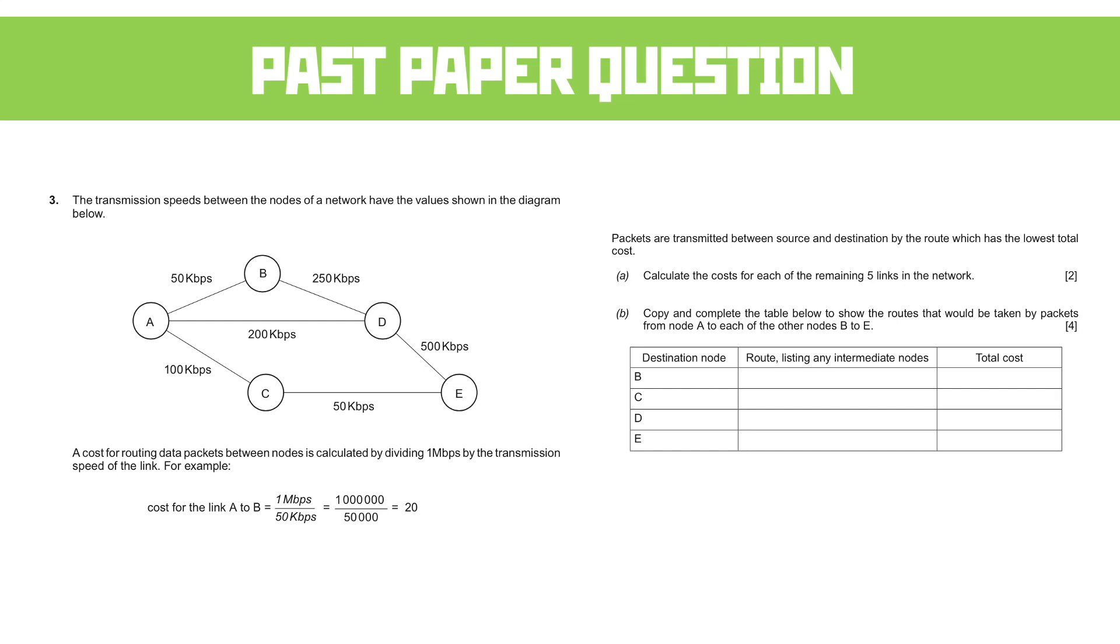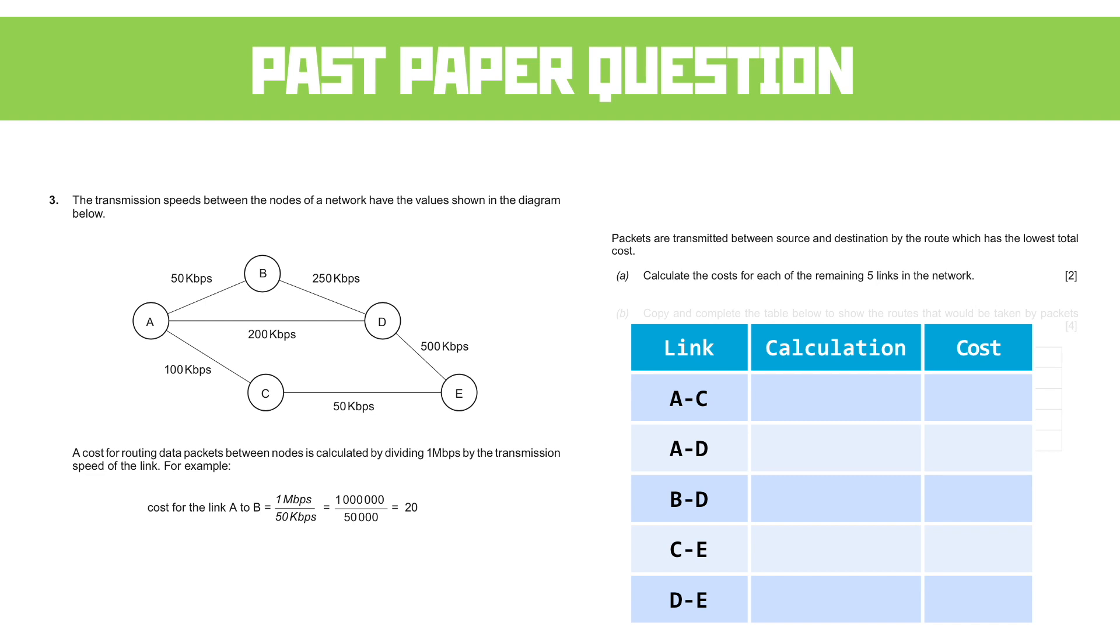So we're going to do that job first, and the easiest way I find to do this is just to stick it in a little table and go through it. So these are all the remaining links that we haven't worked out: A to C, A to D, B to D, C to E, and D to E. We're going to go through and work out each of those in the sum.